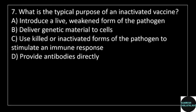7th question: What is the typical purpose of an inactivated vaccine? Answer options: option A, introduction of a live weakened form of the pathogen; option B, deliver genetic material to cells; option C, use killed or inactivated forms of the pathogen to stimulate an immune response; option D, provide antibodies directly.